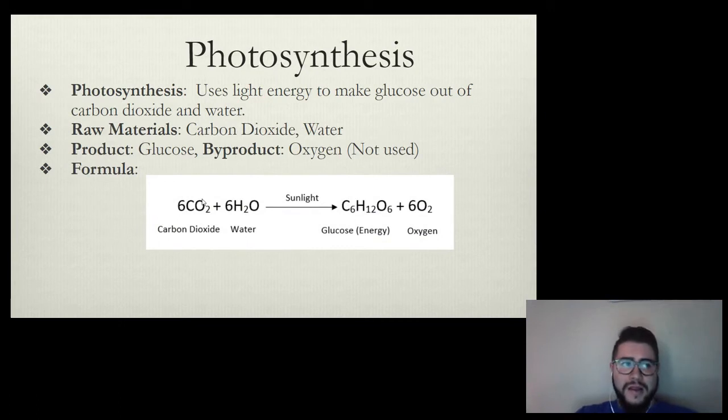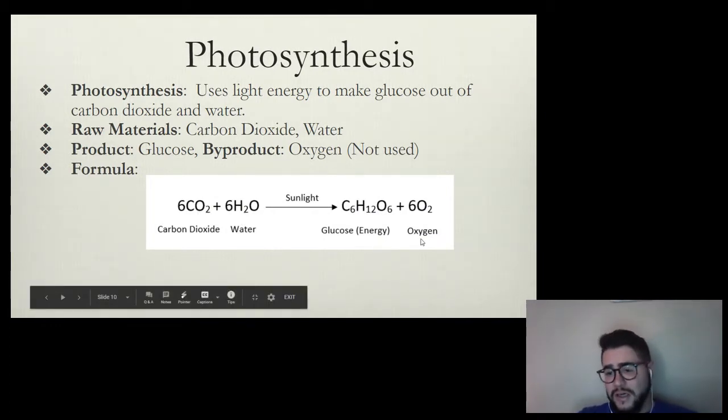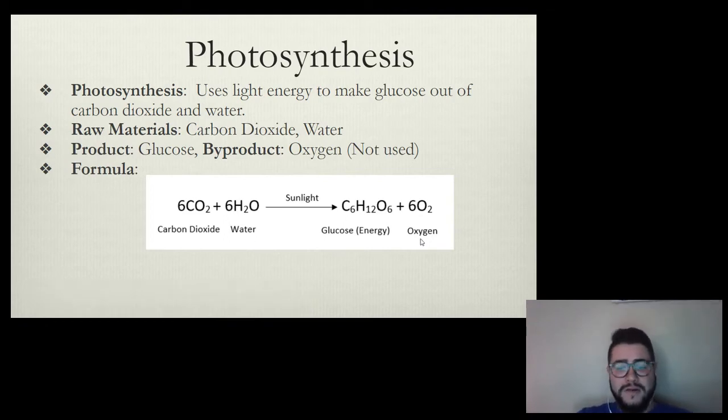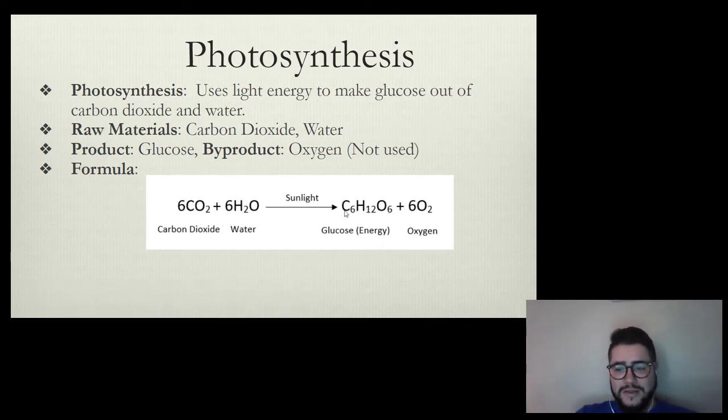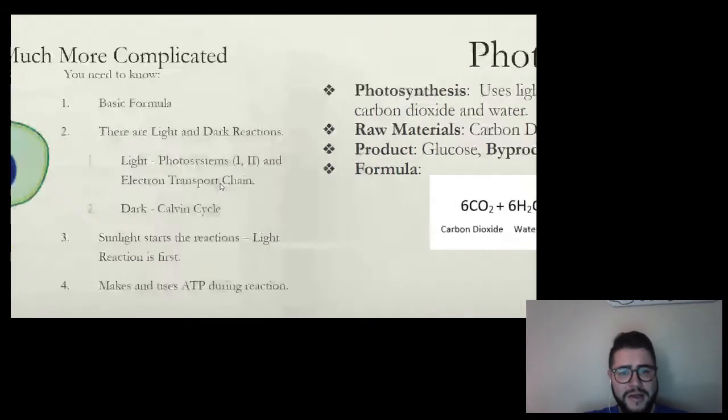Photosynthesis is more complicated than just the equation. Yes, you need to know the equation and memorize it. It's carbon dioxide plus water makes glucose and oxygen. Honestly, just put sixes in front of all those things besides glucose. So 6CO2 plus 6H2O goes to make glucose, which is C6H12O6. Glucose is a carbohydrate. Carbohydrates are in a 1 to 2 to 1 ratio: 6, 12, 6, and then 6 oxygen. At its basic form, photosynthesis uses light energy to make glucose out of carbon dioxide and water. But it's a little bit more complicated than that.